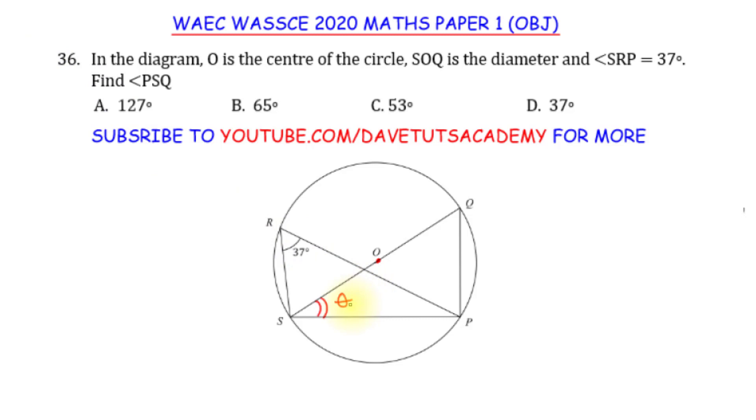Looking at this circle, I can readily say that SRP and SQP, they are actually equal, that this angle is also 37 degrees. Why am I saying that? I'm saying that because I know that by reason of the properties of the angles in the same segment, angle SRP is equal to angle SQP. They are angles in the same segment of the circle, and angles in the same segment, they are equal.